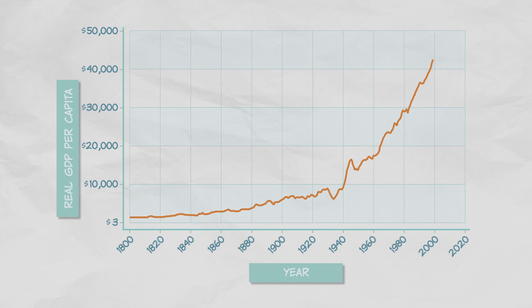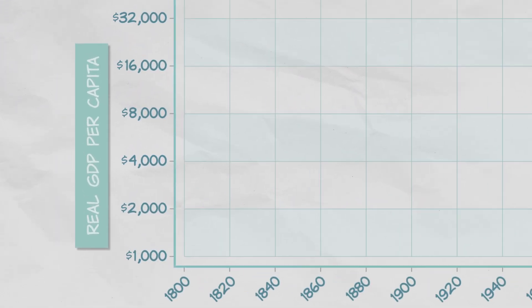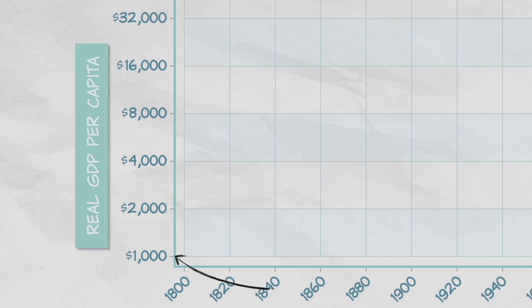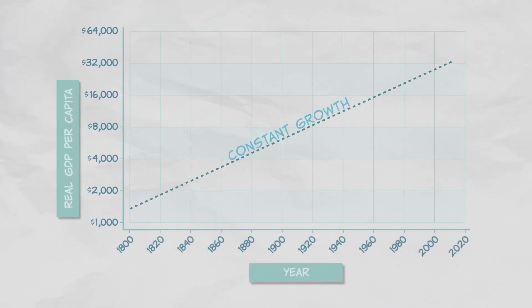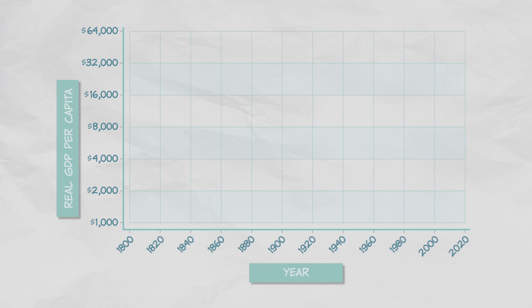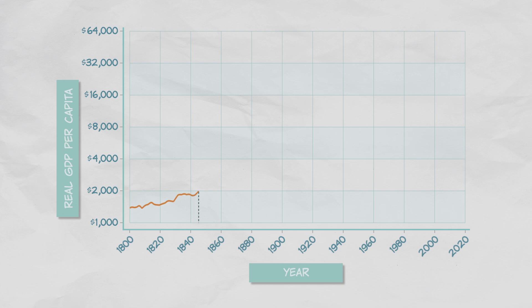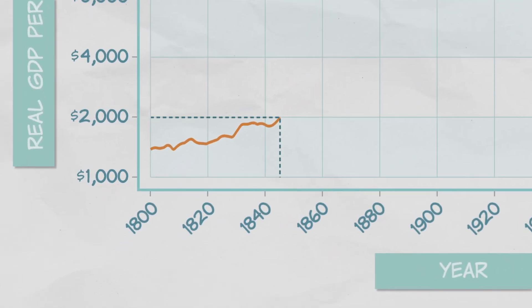The ratio scale helps us see growth rates more clearly. Now each tick is a doubling — here we go from 1,000 to 2,000, then 2,000 to 4,000, and so forth. A straight line on these graphs means a constant growth rate. For example, GDP per capita in the United States in 1845 was around $2,000. 35 years later, in 1880, it had doubled to $4,000. From the rule of 70, we know immediately that the growth rate over this period was about 2% per year.